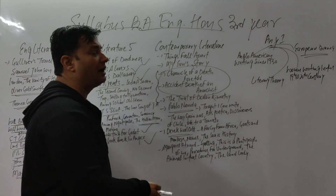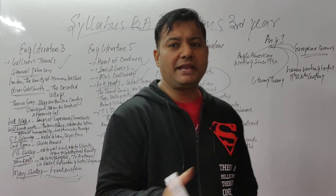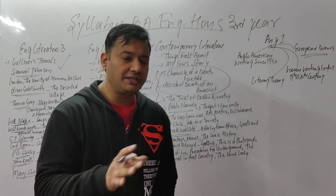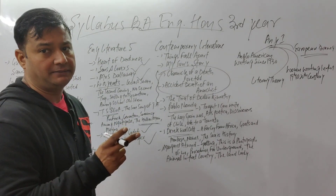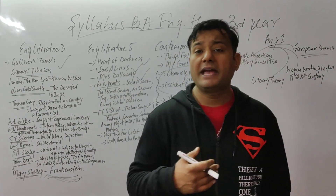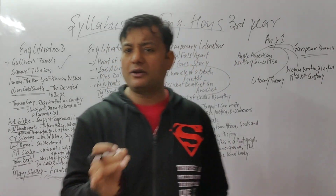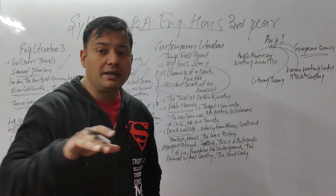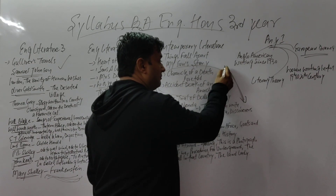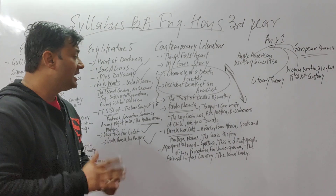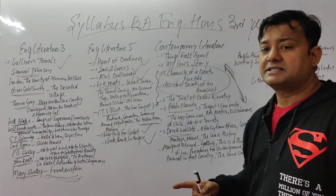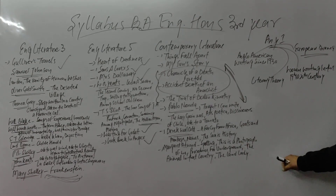Then come to the next paper: Contemporary Literature. Contemporary Literature covers third-world countries — Africa, Asia. So here we have Things Fall Apart and My Son's Story. The content is highlighted and explained for what you need to prepare — the reading will also be different; you need to work in a different way. Come back to Chronicle of a Death Foretold, Of An Arche, and The Trial of Devin Kemati — please pay attention to these. Come to Pablo Neruda and Derek Walcott poetry — I have highlighted these. If you haven't paid attention, please check the screenshot.